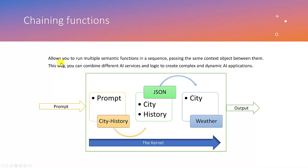Chaining functions allows you to run multiple Semantic Kernel functions in a sequence, passing the same context object between them. This way you can combine different services and logic to create complex and dynamic applications. We have a semantic function that returns history, which can contain a city name and historical information. We also created a weather plugin that gives weather updates based on cities.